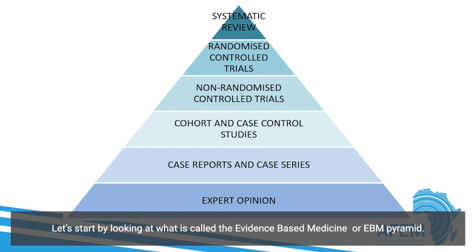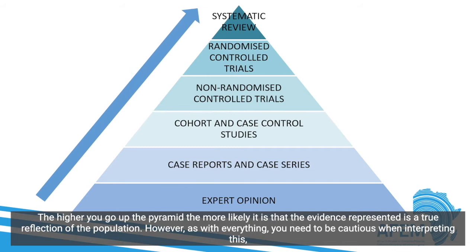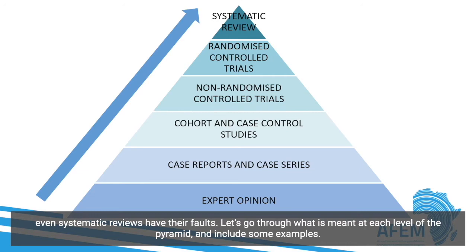Let's start by looking at what is called the evidence-based medicine, or EBM, pyramid. At the bottom of the pyramid, expert opinion is the most biased of the evidence, and at the top, systematic review is the least biased. The higher you go up the pyramid, the more likely it is that the evidence is a true reflection of the population. However, you need to be cautious when interpreting this, as even systematic reviews have their faults. Let's go through what is meant at each level of the pyramid and the pros and cons of each level.